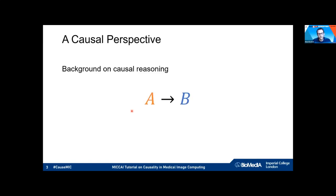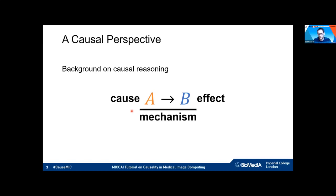Taking a causal perspective on predictive modeling, let me quickly remind you of some background on causal reasoning — we saw this in the first lectures on graphical models. In the simplest case, we assume there is a cause and an effect, represented with an arrow indicating which is the cause and which is the effect.